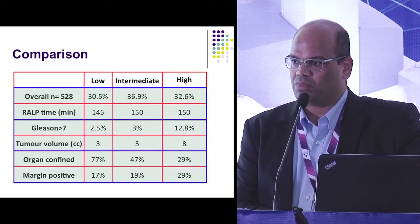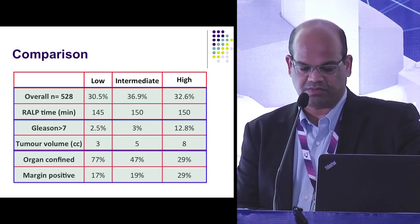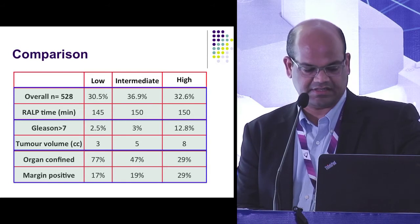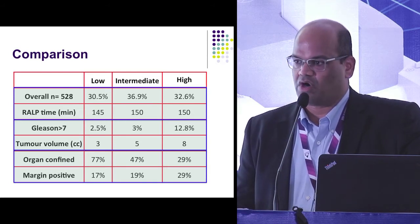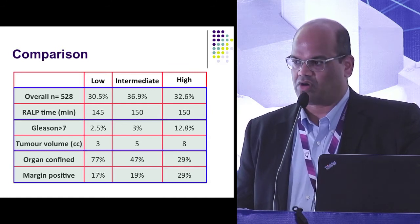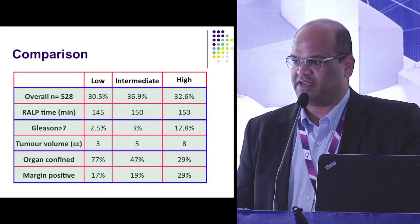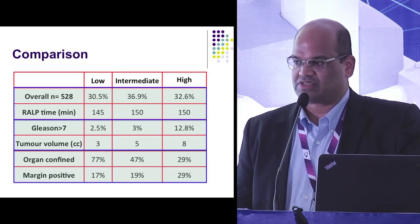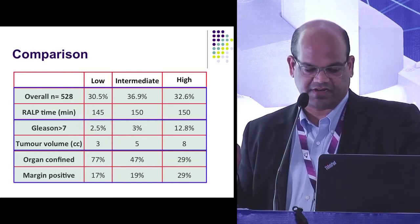Gleason 7 or more does increase with high-risk disease, and tumor volumes are 3, 5, and 8cc across low, intermediate, and high-risk groups. Around a quarter of low-risk prostate cancer patients have non-organ-confined disease, 50 percent of intermediate-risk patients probably have high-risk disease features, and around one in three high-risk patients have organ-confined cancer.